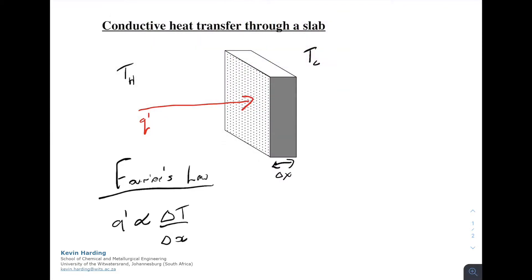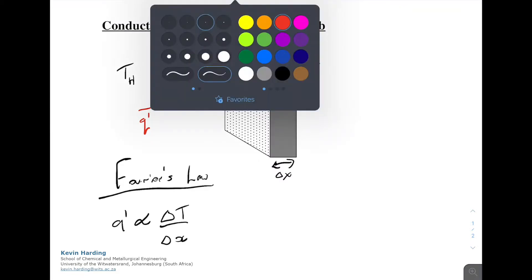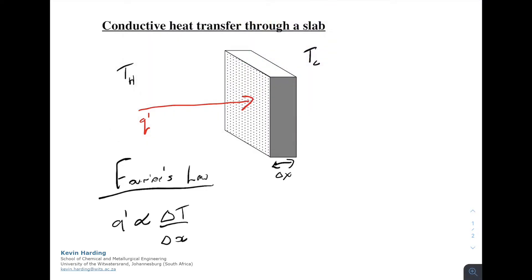Q is a Q prime, which is a heat flow per area that we are flowing through. If we rewrite Fourier's law and include a proportionality constant, we can write Q equals minus K delta T delta X, where K is the thermal conductivity.